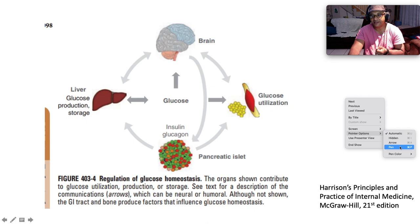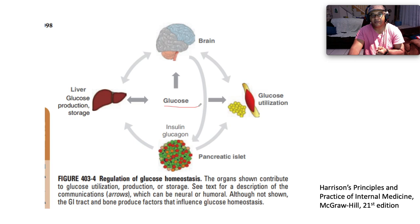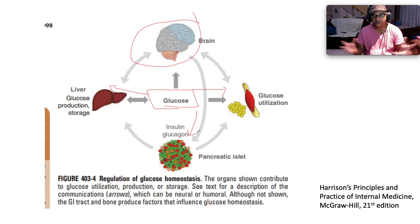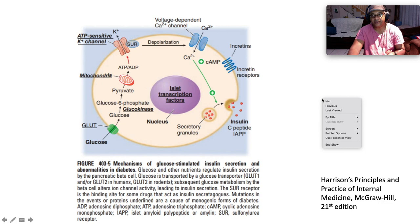This diagram from Harrison's demonstrates regulation of glucose homeostasis. Glucose is taken up by many cells in the body and is the primary energy source for the brain. It is also utilized by muscle and the liver, which converts glucose to glycogen for storage and liberates it in times of need. Glucose also moves into the pancreatic islet cells, stimulating insulin production, while alpha cells produce glucagon, which causes liberation of glucose from peripheral body stores.